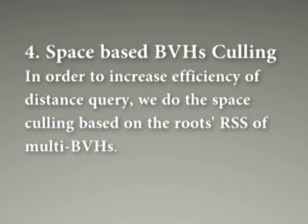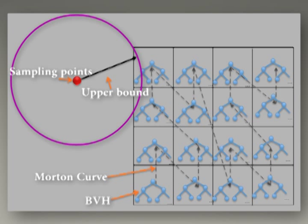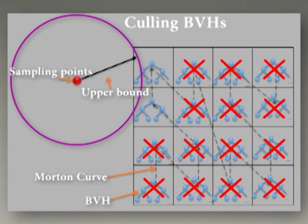In order to increase efficiency of distance query, we perform space culling on root BVs of multi-bounding volume hierarchies. To perform a distance query, we find all the candidate bounding volume hierarchies which are near to the query point. We only keep the bounding volume hierarchies which have BVs at their roots that overlap with a sphere centered on the query point and having the upper bound as its radius.